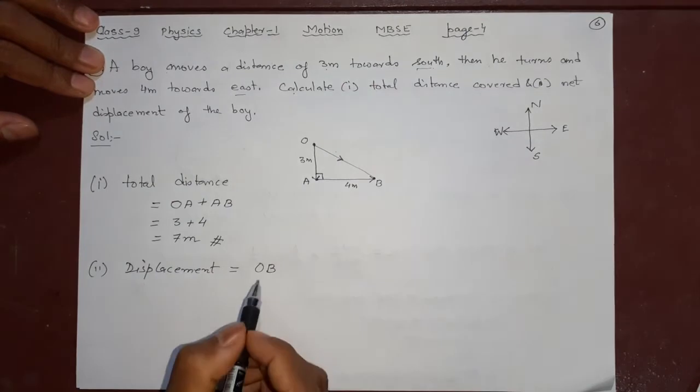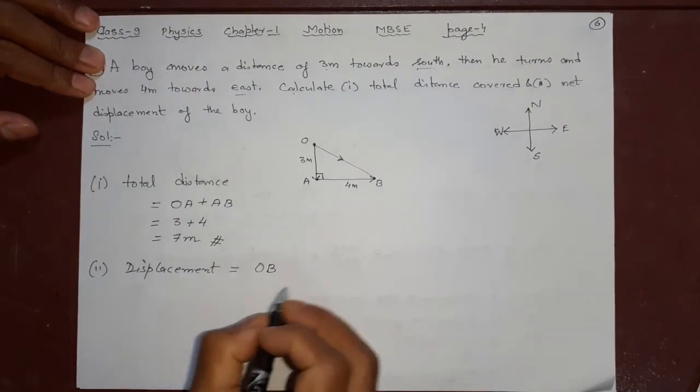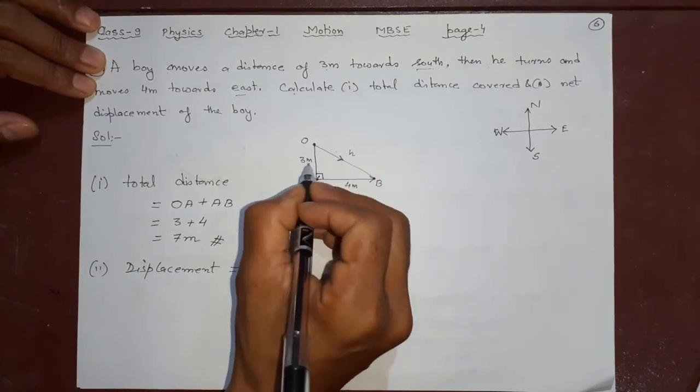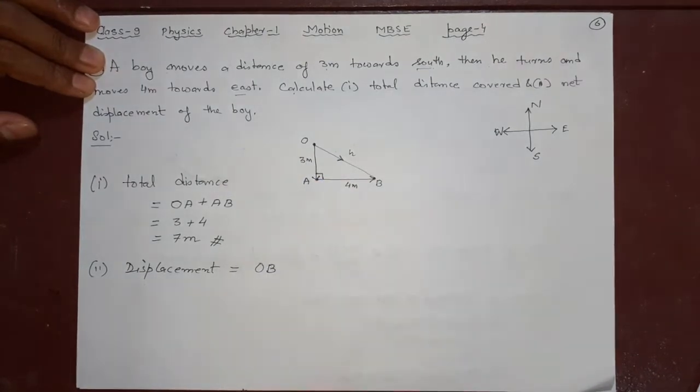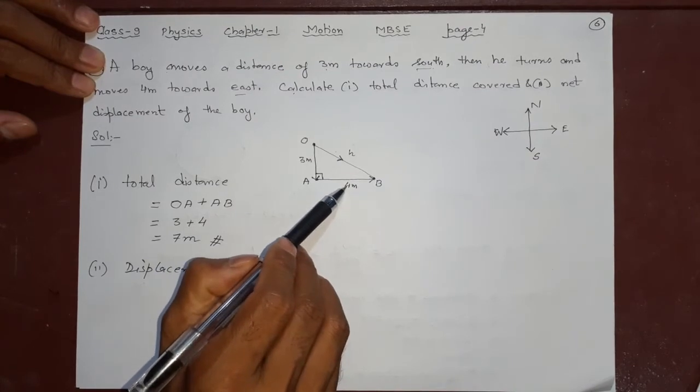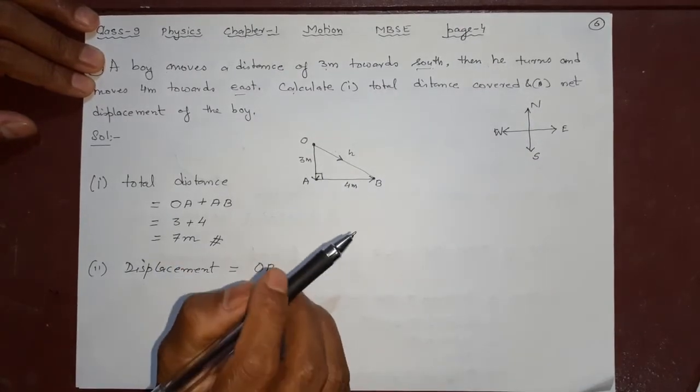This is a right triangle. In a right triangle, there is some relation. What is that? Hypotenuse square equal to perpendicular square plus base square. Remember, H² = P² + B². You can see these things are going to come in your maths also.